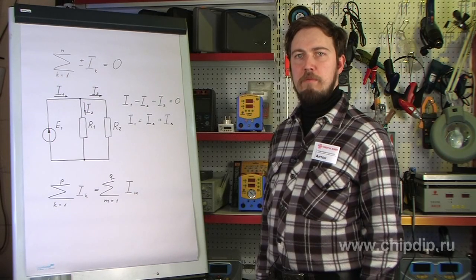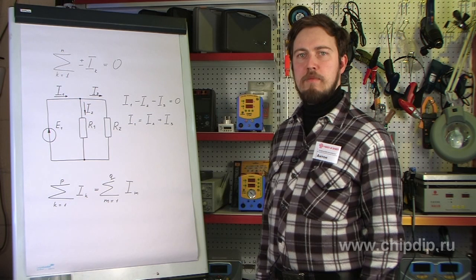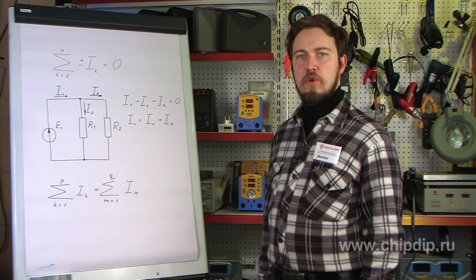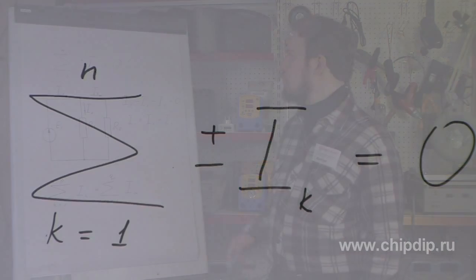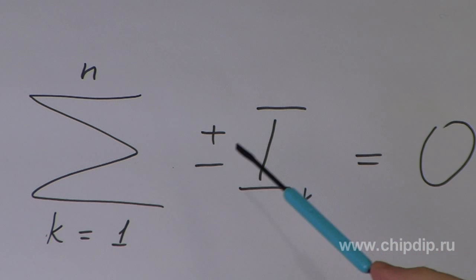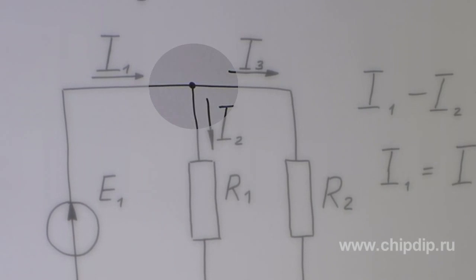Let me expand on the first Kirchhoff's law and its application. This law is based on electric current continuity and applies to electric circuit nodes as follows: An algebraic sum of current within a node equals zero.